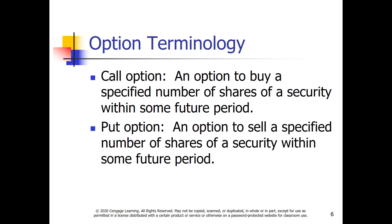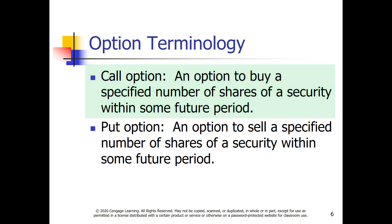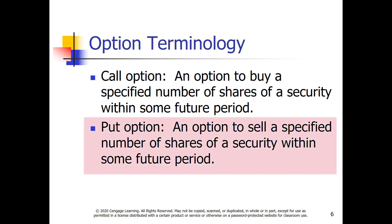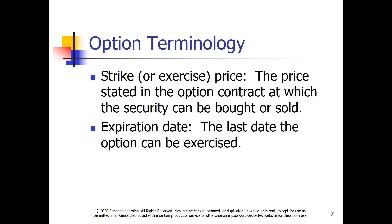Two types of options are traded: puts and calls. Calls are by far more intuitively comfortable for most people to understand. A call gives the buyer or holder the right to buy an asset at a specified price within a specified period. The put gives the holder the right to sell an asset at a specified price within a specified period. The predetermined price set at the time the option is bought or sold is called the strike price or the exercise price.